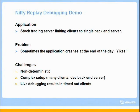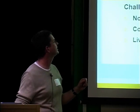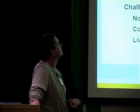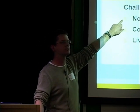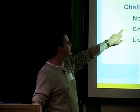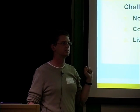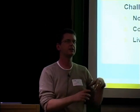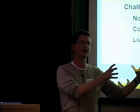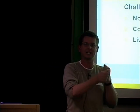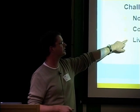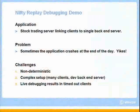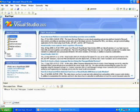For the demo I've got a stock trading server application. It links a bunch of remote clients to a single back-end server — it takes trade requests, processes them, does some logging, and sends them to a back-end that executes the transaction. The problem is the application sometimes crashes at the end of the day. The bug is non-deterministic — sometimes it happens, sometimes it doesn't. It's also particularly challenging to debug because the setup is complex: the developer has to spawn 150 clients, set up a development-only back-end server. In addition, live debugging results in timed-out clients, since whenever you set a breakpoint your clients end up timing out.